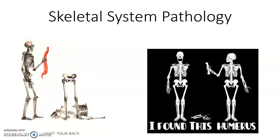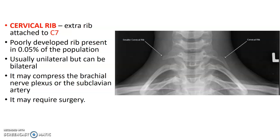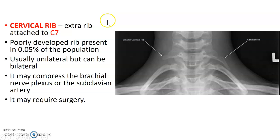Skeletal system pathology. Cervical rib is an extra rib attached to C7. It is usually unilateral but can be bilateral as well.